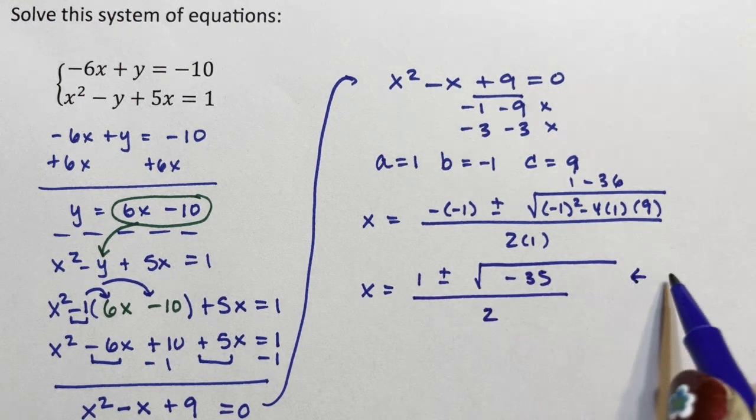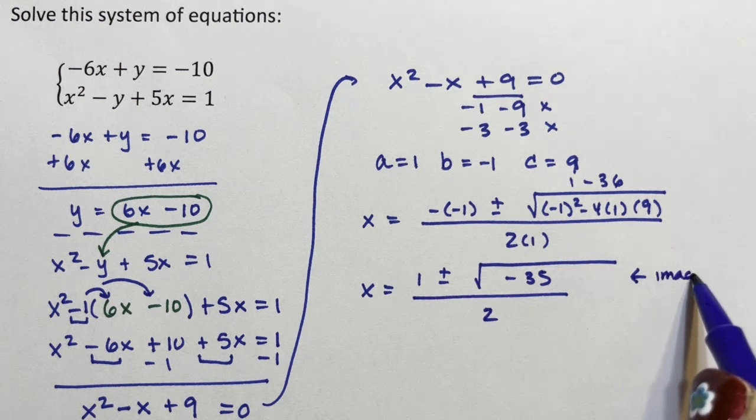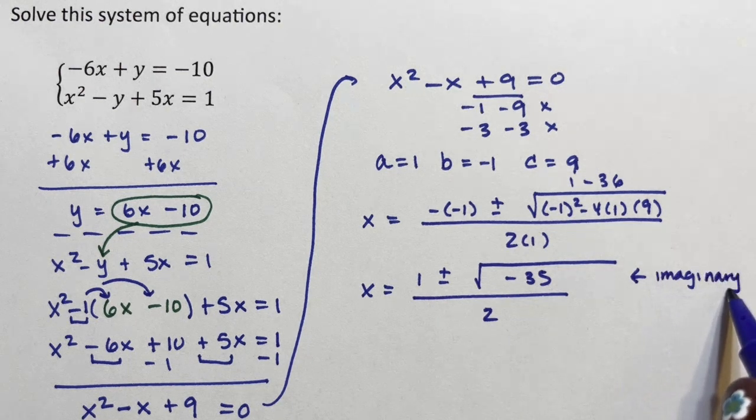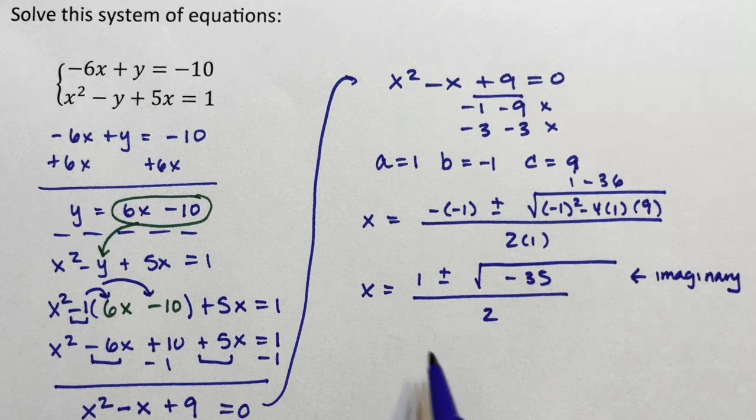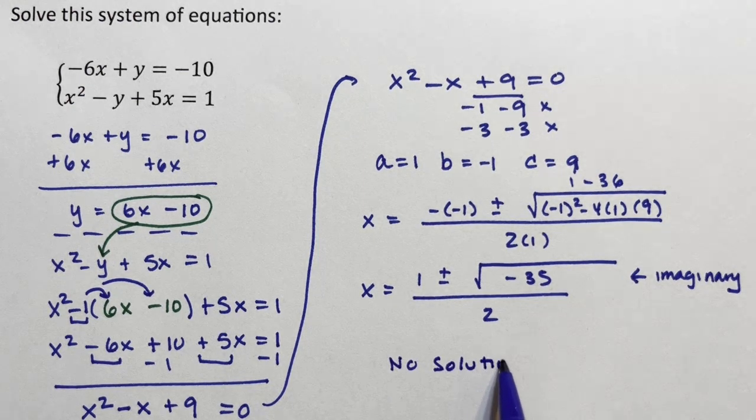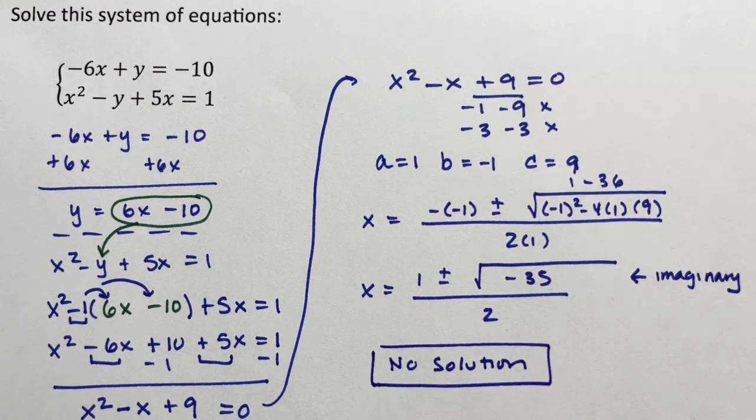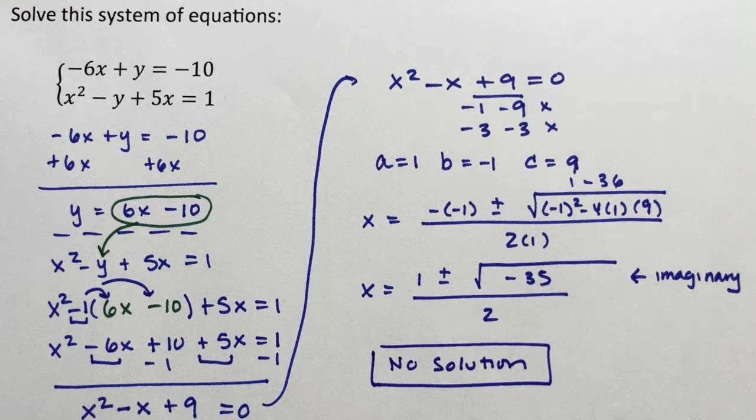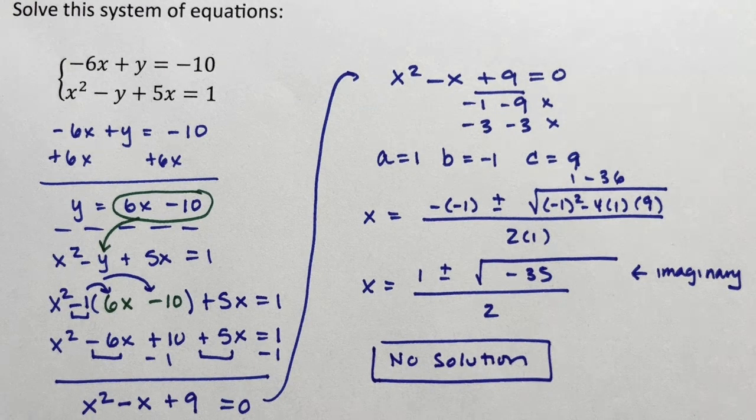Well, negative 35 is imaginary. And if that's imaginary, that means this is no solution. It means we're in a situation where the line and the quadratic do not intersect.